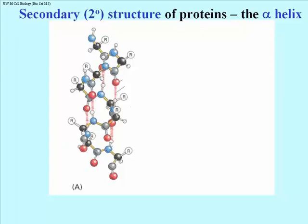Let's talk about secondary structure. There are actually two or even three components of secondary structure. We'll talk about the alpha helix first.